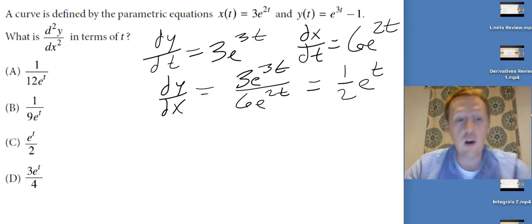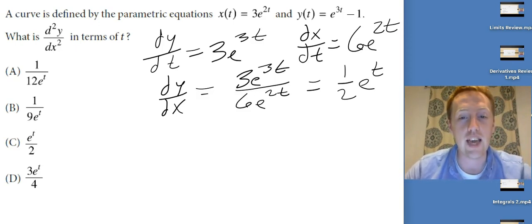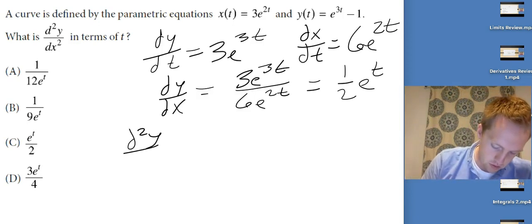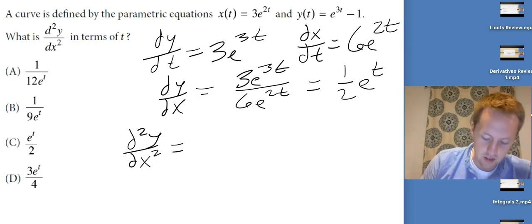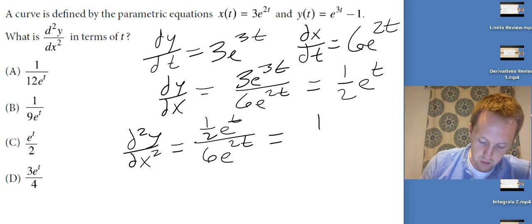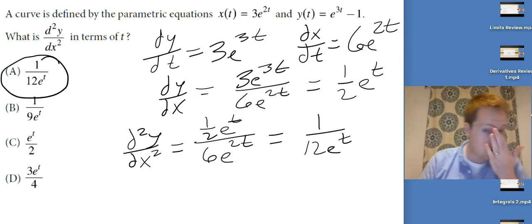Now if I want d²y/dx², I need to take the derivative of (1/2)e^t and divide by dx/dt. The derivative of (1/2)e^t is (1/2)e^t. Divide by 6e^(2t), and that gives you 1/(12e^t) after simplification.